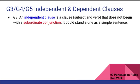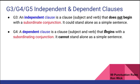In the group of independent and dependent clauses, an independent clause is a clause that contains a subject and a verb and does not begin with a subordinating conjunction. An independent clause could stand alone as a simple sentence. A dependent clause is a clause which contains a subject and a verb that begins with a subordinating conjunction. It cannot stand alone as a simple sentence.